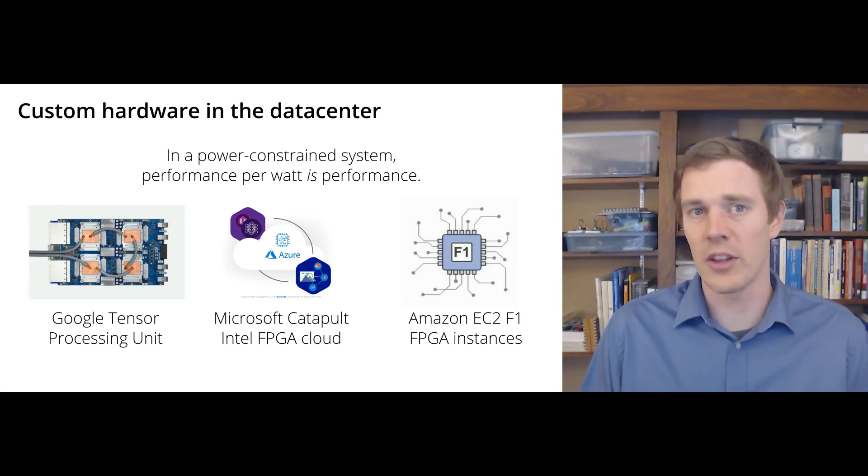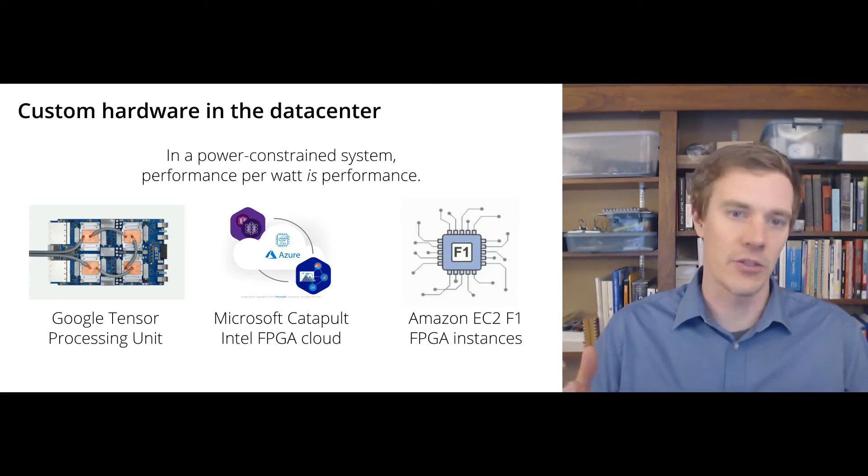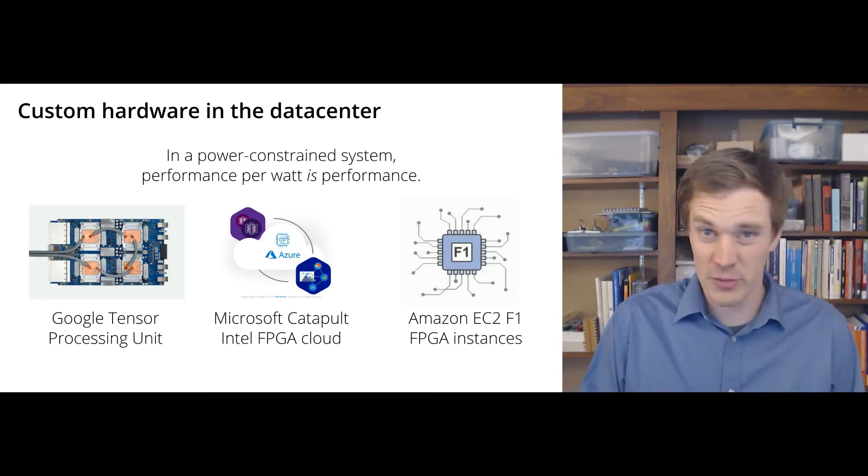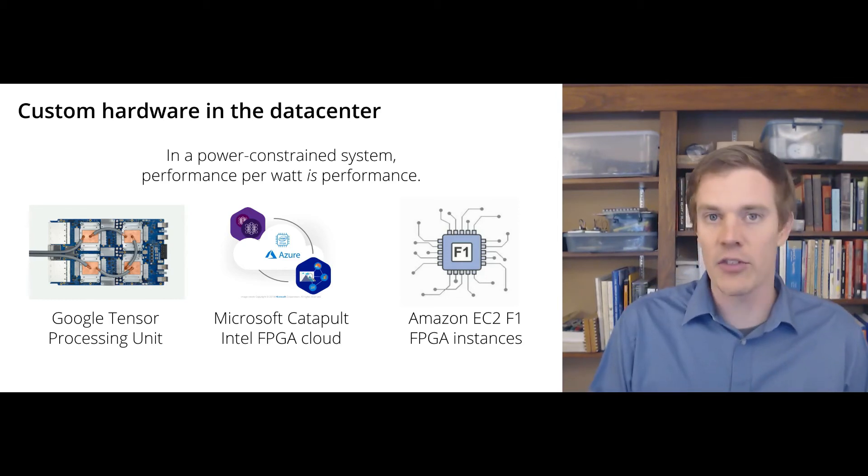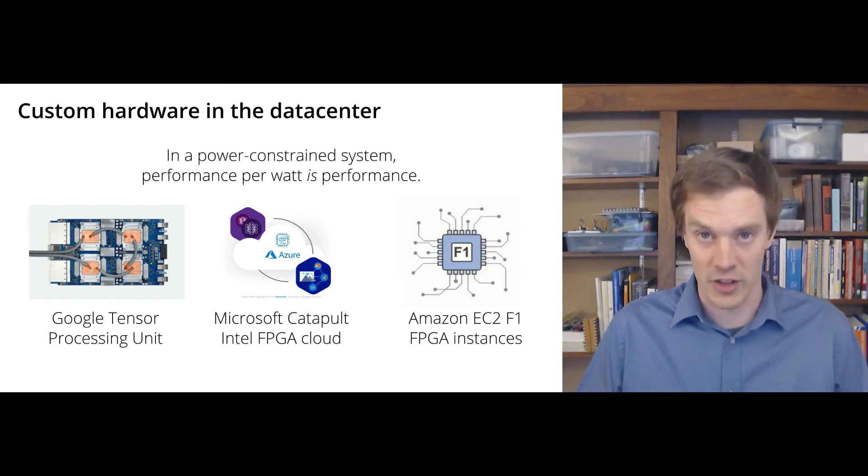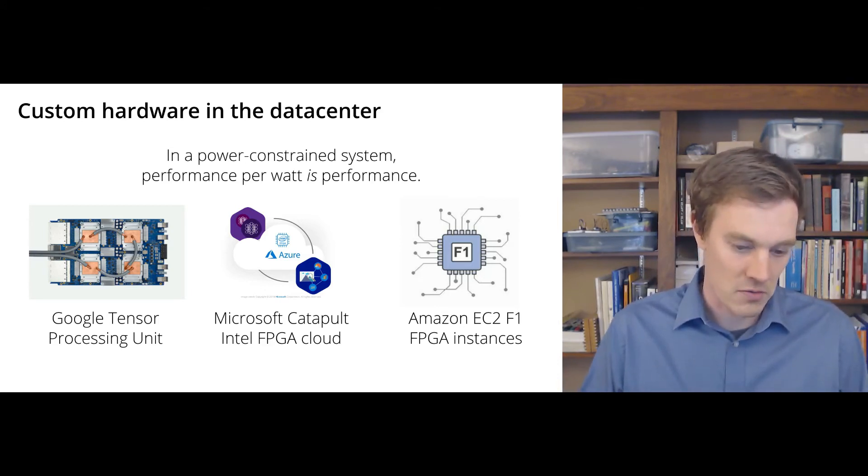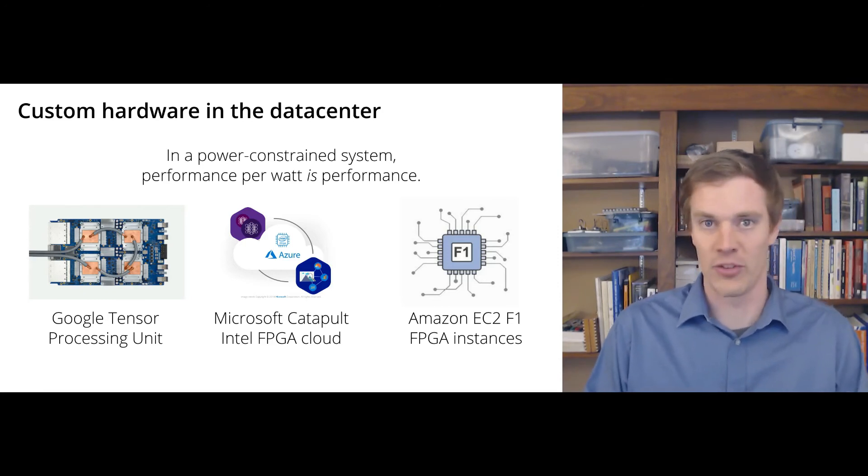So more and more, we're seeing specialized hardware moving into large data centers. And again, performance per watt, the amount of computation you can do for a certain amount of energy is the primary dictator of what your actual performance is. These days, even data centers are limited by how much electricity you can put in and how much heat you can get out. So if you can do some computation for half the energy and therefore produce half as much heat coming out, you can do twice as much computation in your data center.